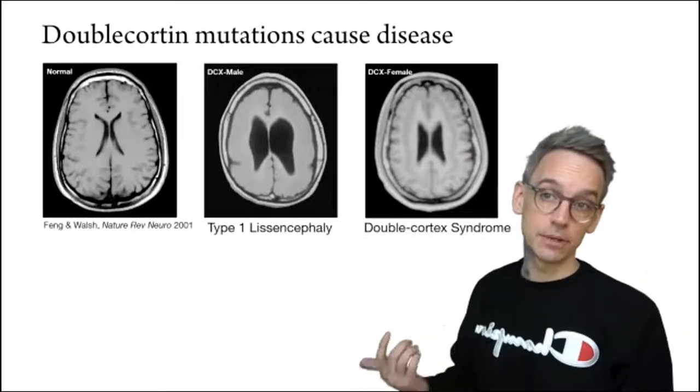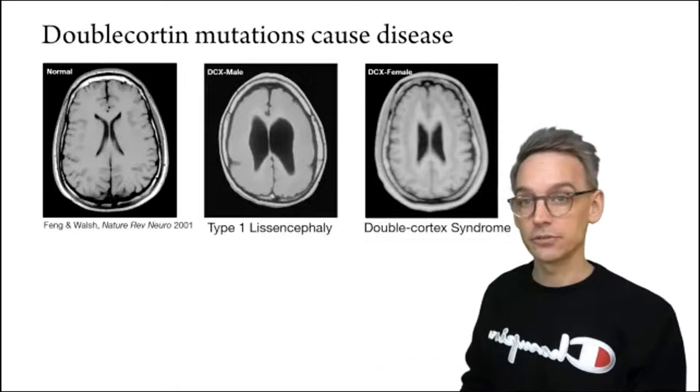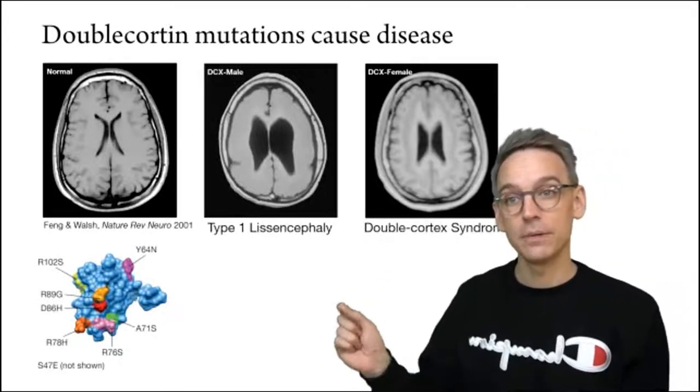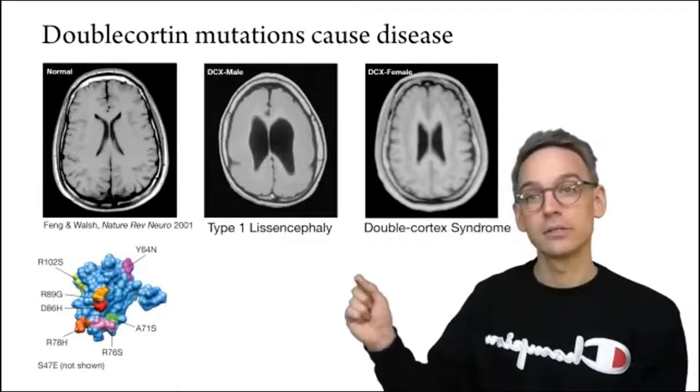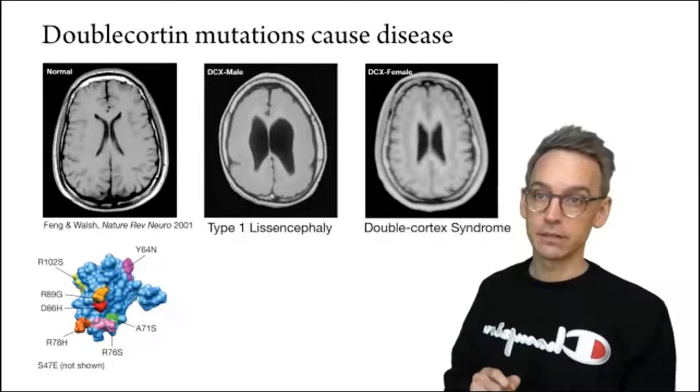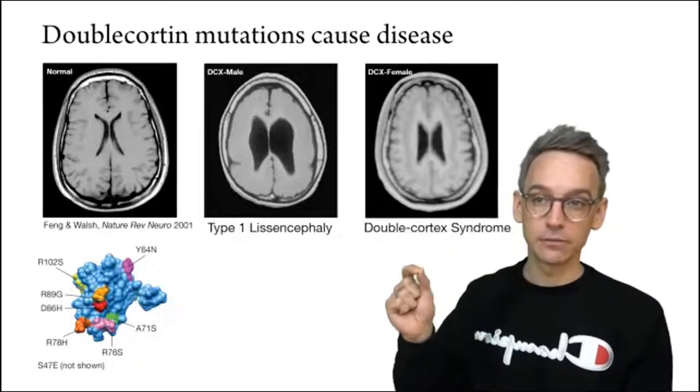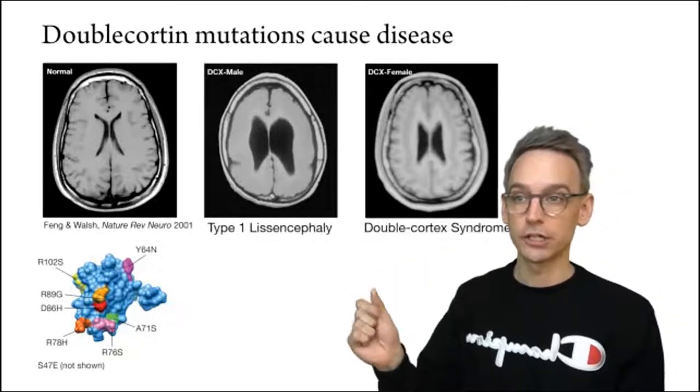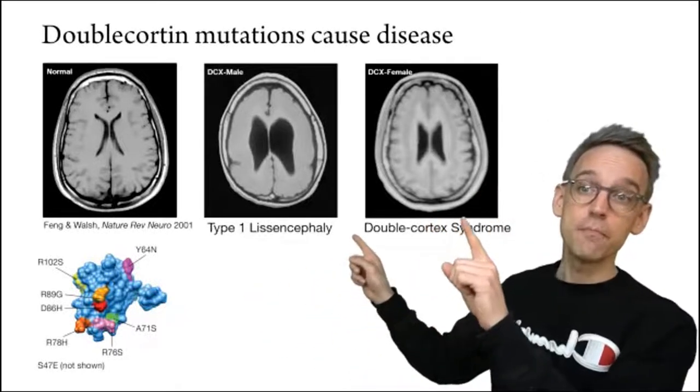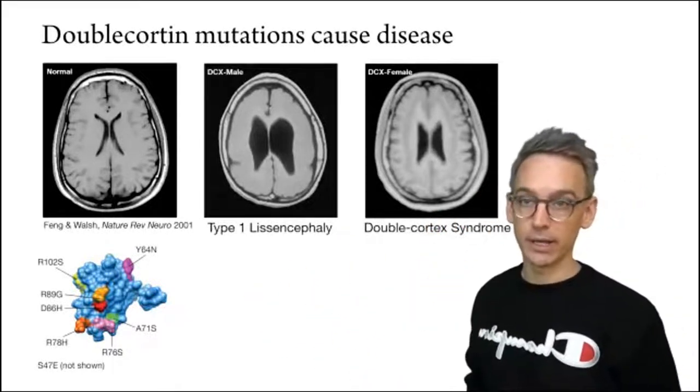Now, females have it a little bit easier because DCX is located on the X chromosome. And so they typically have one diseased copy and one healthy copy. So they suffer from a less severe disease in which they get a secondary cerebral cortex that forms this extra layer of gray matter. This is their so-called secondary cortex or their double cortex. And these girls typically suffer from various forms of intellectual disability and epilepsy. And again, this is caused by just a single amino acid substitution on some surface residue of the protein, showing you just how important it is for cells to make proteins exactly right. Because one single switch from a Y to an N or an R to an S causes these dramatic changes in brain morphology.